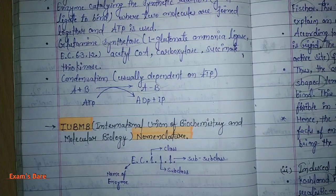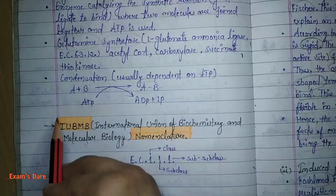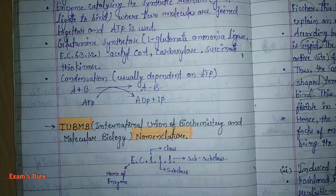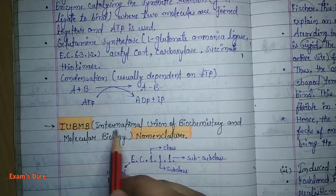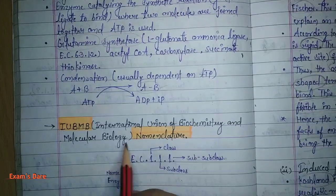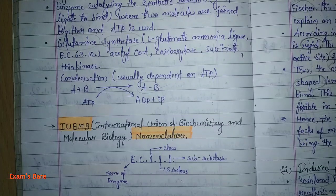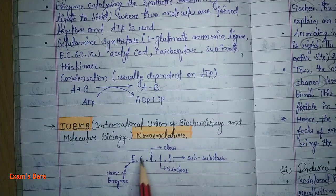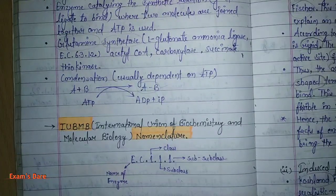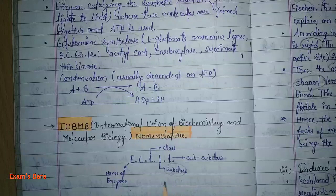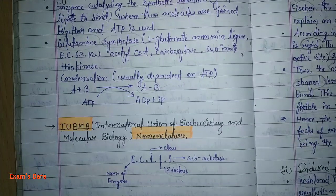Next we see Nomenclature of Enzymes — IUBMB Nomenclature. IUBMB stands for International Union of Biochemistry and Molecular Biology. This full form is sometimes asked in one or two marks. Basically, the name representation of enzymes uses: the first number to define the class, the second number for the subclass, and the third number for the sub-subclass. This is our representation of the nomenclature of enzymes.